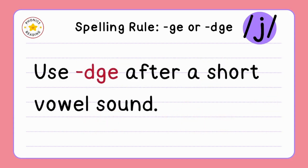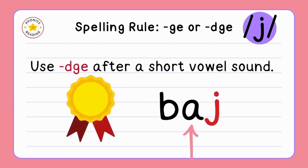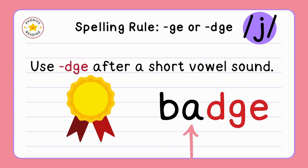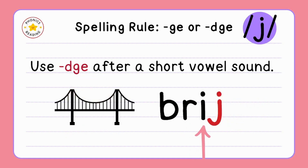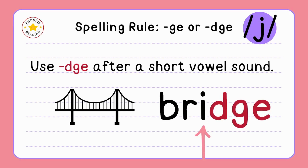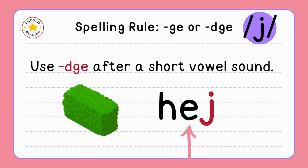Use DGE after a short vowel sound. In the word 'badge,' the A has a short vowel sound, so we write DGE for the J sound. In 'bridge,' the I is a short vowel sound, so we use DGE. In 'hedge,' the E has a short vowel sound, so we also write DGE for the final J sound.